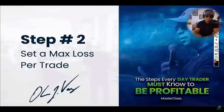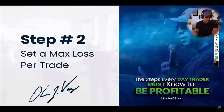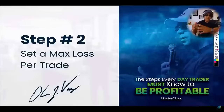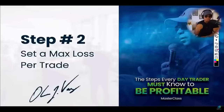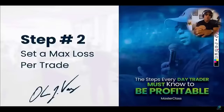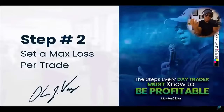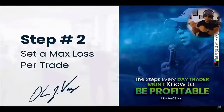Now step number two — write these points down. Set a maximum loss per trade. There is a distinct difference between a maximum loss per day and a maximum loss per trade. If you have a maximum loss per day of $200, then your maximum loss per trade should not also be $200 — that is stupid. I don't want you using the whole day's allotment on one trade. That's another form of gambling — betting your whole $200 on a single play.